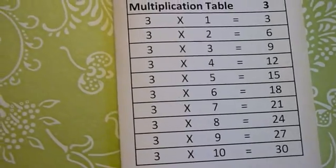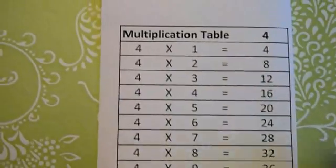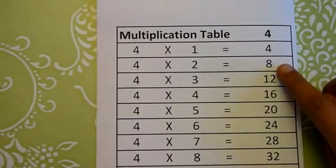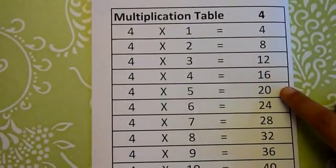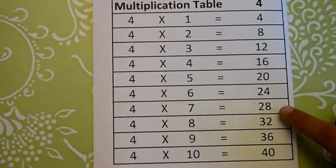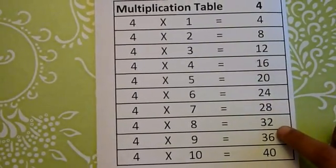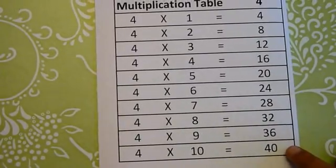Next we'll go to multiplication table 4. 4 1's are 4, 4 2's are 8, 4 3's are 12, 4 4's are 16, 4 5's are 20, 4 6's are 24, 4 7's are 28, 4 8's are 32, 4 9's are 36, 4 10's are 40.